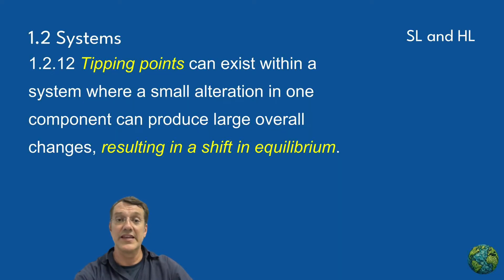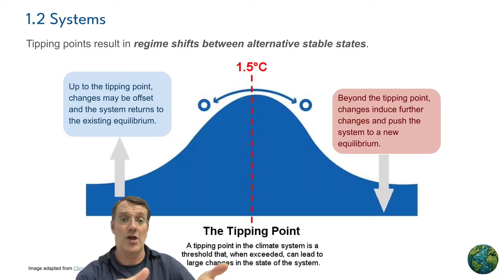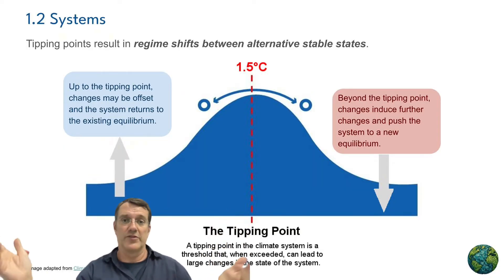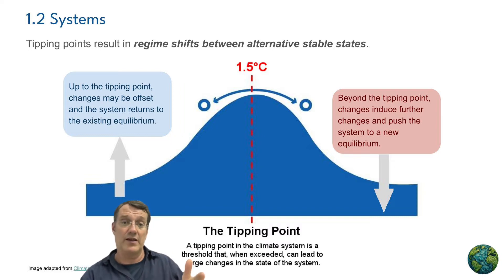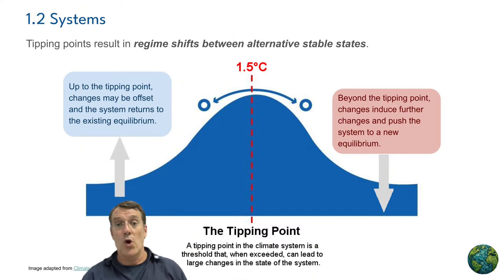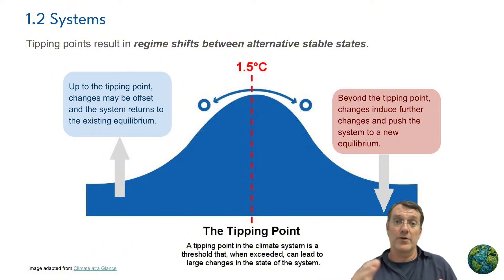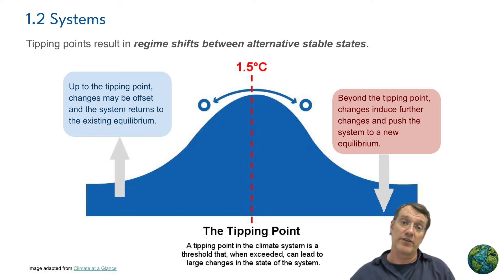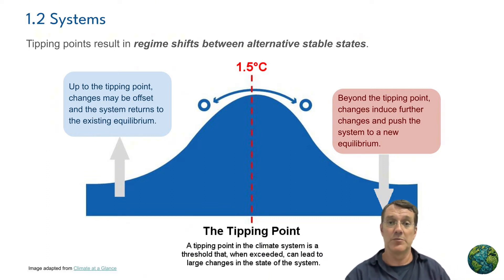Tipping points within a system can lead to regime shifts between alternative stable states — two stable states that are alternatives. Up to the tipping point, small changes may be offset as the system tries to maintain its original equilibrium. However, once the tipping point is crossed, the changes further induce greater change, pushing the system farther from the existing equilibrium and into a new equilibrium state.